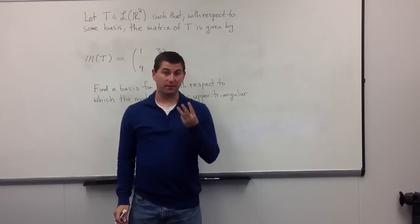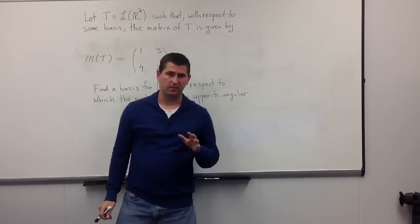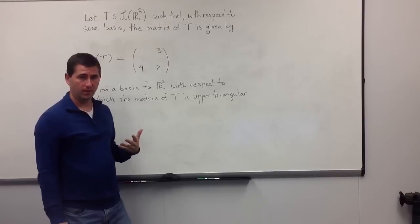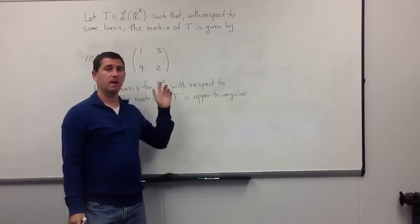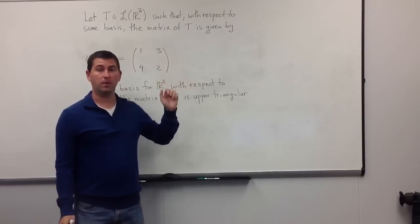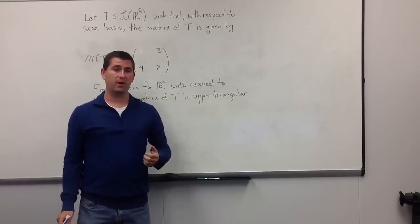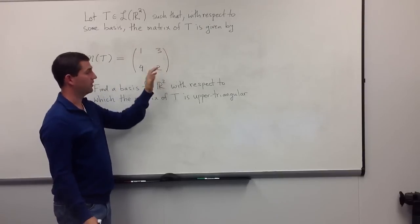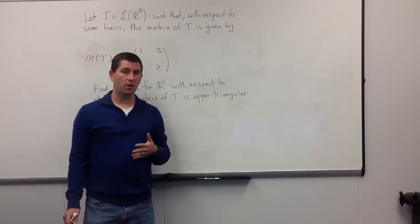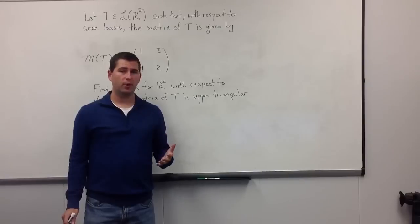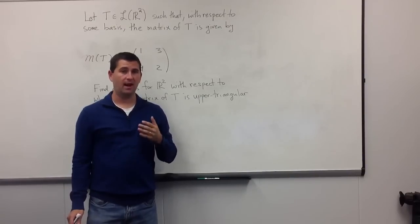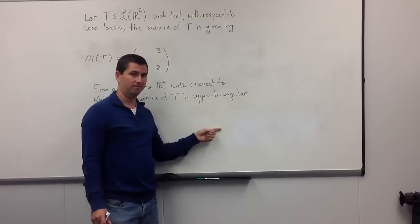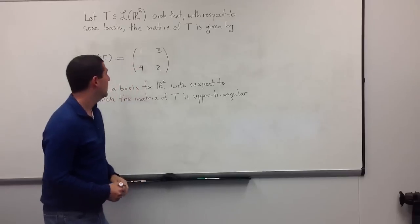This is the first of three example videos where we explore the process of taking a given matrix, changing the basis for the underlying vector space, so that the matrix of the corresponding operator is now going to be in upper triangular form. We're going to start easy — we're going to start with a 2x2 matrix. The idea is going to be to use something that we saw in the proof that every operator over a complex vector space has an eigenvalue.